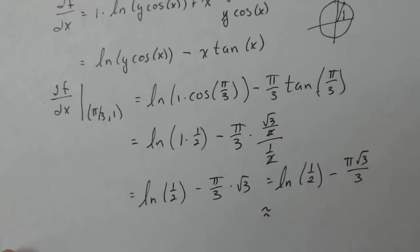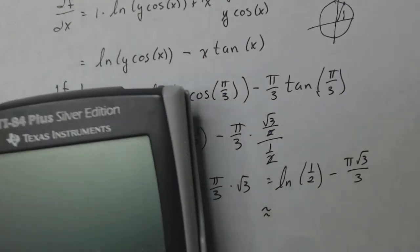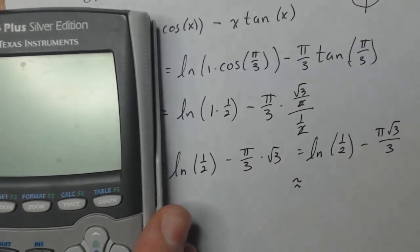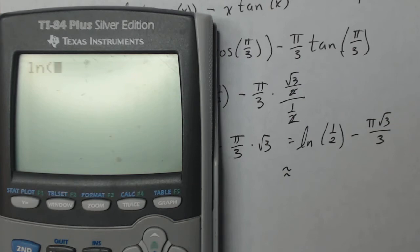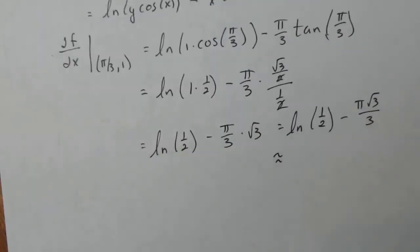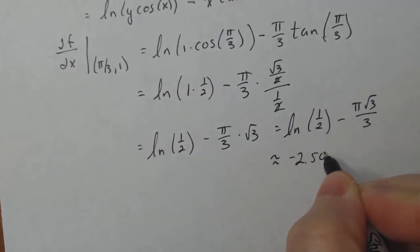Now, when I approximate that with my calculator, let me get my little machine out. All right, let's see. There's my machine. All right, so I wanna do natural log of one divided by two minus pi times the square root of three divided by three. I get negative 2.5069, negative 2.5069.